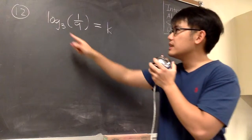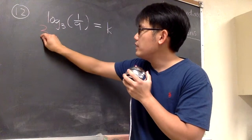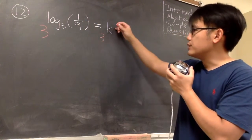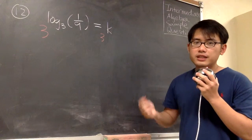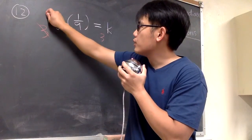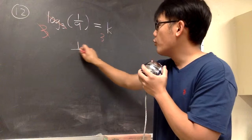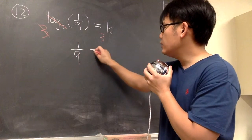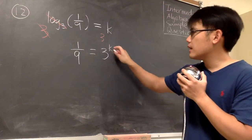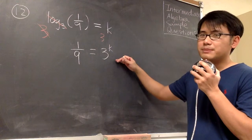We look at this — it's a log with base 3. So what we do is we take 3 raised to this exponent, and we take 3 raised to this exponent. The reason is because when the bases match, we can cancel this 3 with log base 3, and then we will just get 1 over 9 equals 3 to the k's power. This is how we change from a log equation into an exponent equation.